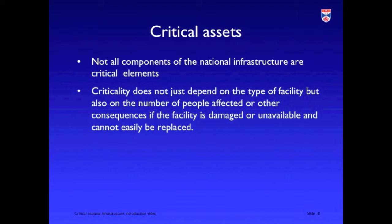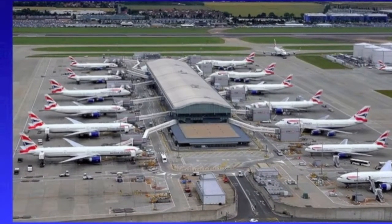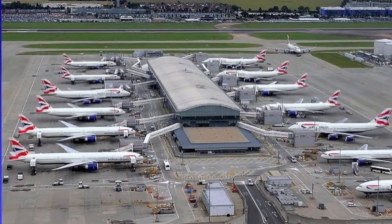When we look at our critical infrastructure, we have within it a huge number of assets. The reality is that not all of those assets are equally important — they're not all essential for the delivery of our critical infrastructure. We usually think about this in terms of the consequences of loss. Our most critical assets are those where, if they're damaged or unavailable, they will affect the largest number of people. This picture is Heathrow Airport in London, one of the world's major airports. Millions of people use this airport every year and it's absolutely essential for the effective functioning of the aviation network in the UK — an absolutely critical asset.